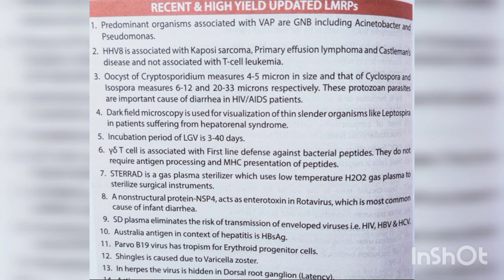SD plasma eliminates the risk of transmission of enveloped viruses: HIV, HBV and HCV. Australia antigen in context of hepatitis is HBsAg. Parvo B19 virus has tropism for erythroid progenitor cells. Shingles is caused due to varicella zoster.